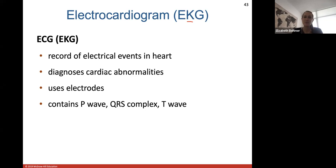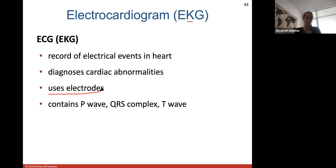EKGs are used in many situations - you can even monitor a baby's heart rate in the womb during labor. If someone comes into the ER complaining of left side pain, heart pain, or feeling like an elephant is sitting on their chest - telltale signs of a cardiac event - they will be hooked up to see the electrical activity as it flows through the heart. EKGs work by placing electrodes and leads throughout the body that pick up electrical activity coming from the heart through skin cells. The EKG contains a P wave, a QRS complex, and a T wave.